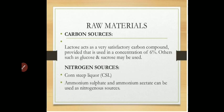Lactose sugar is used as the primary carbon source; other sugars such as glucose or sucrose may also be used in penicillin production. Corn steep liquor is the major source of nitrogen. Other than corn steep liquor, ammonium sulfate or ammonium acetate can also be used as nitrogen sources for the growth of Penicillium chrysogenum.